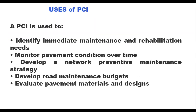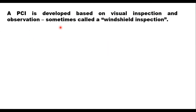The uses of PCI are many: it is used to identify immediate maintenance and rehabilitation needs of the pavement, monitor pavement condition over time, develop a network preventive maintenance strategy, develop road maintenance budgets, and evaluate pavement materials and design. In fact, PCI is a very important tool in pavement management systems. It is developed based on visual inspection and observation, also called windshield inspection.